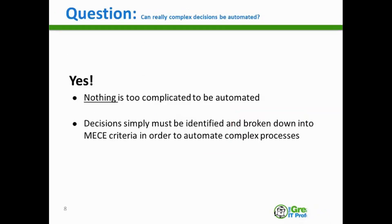Can really complex decisions be automated? The answer is yes. Nothing is too complicated to be automated. Decisions must be identified and broken down into MECE criteria in order to automate complex processes. In theory, every process can move toward the state of true automation — there's never a point where you're at 20% automation and can say it can't go further. The one consideration is ROI: is the investment in understanding the process logic at the nuance required for automation going to yield returns based on what the process is doing? It's a very practical consideration, but it's important to grasp that everything can theoretically be fully automated.